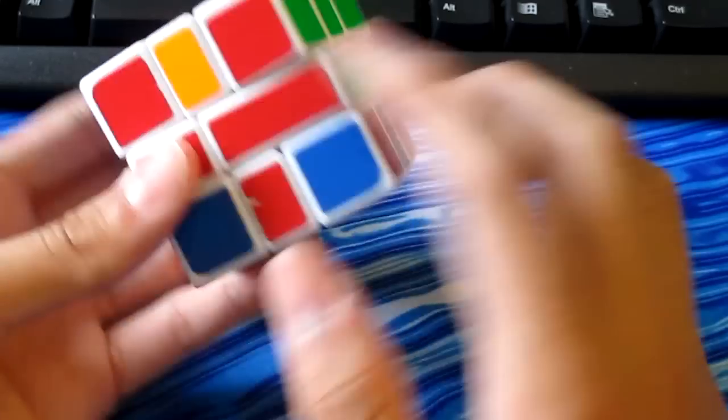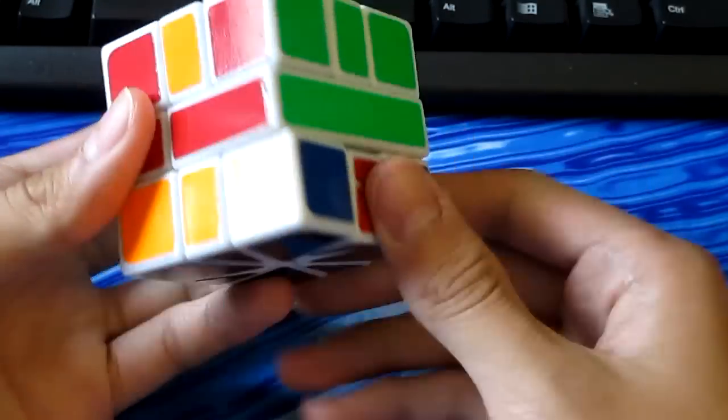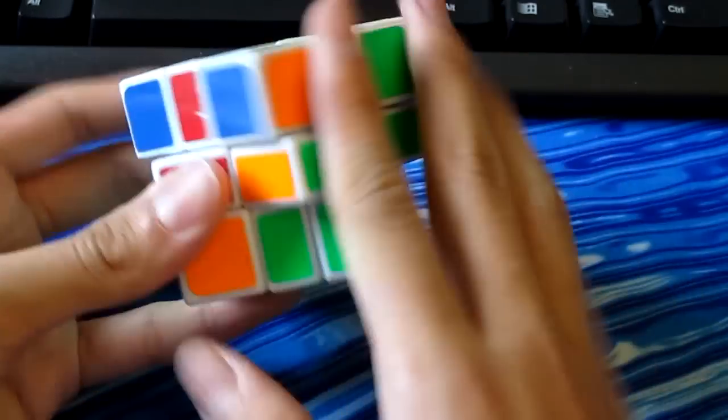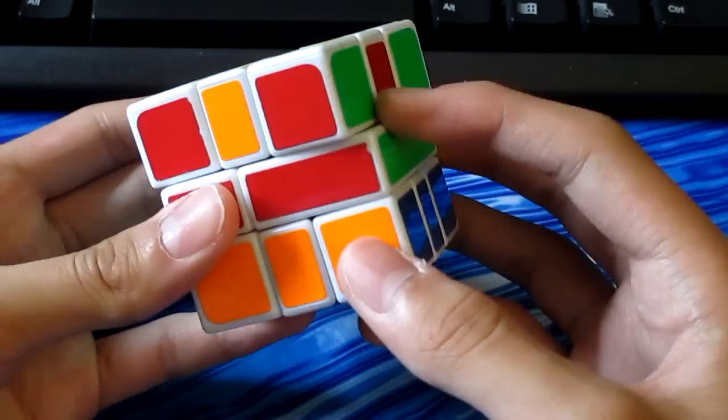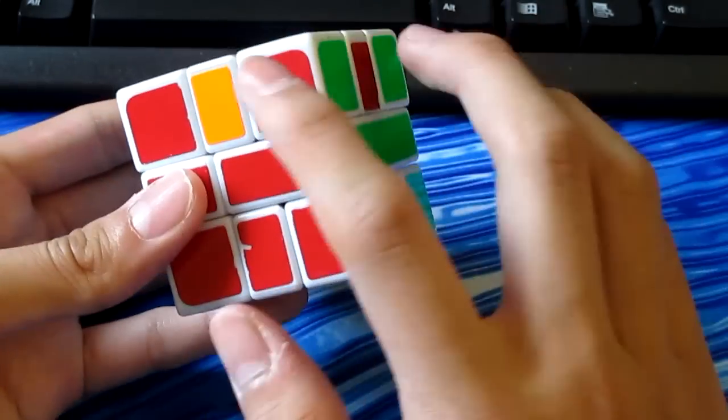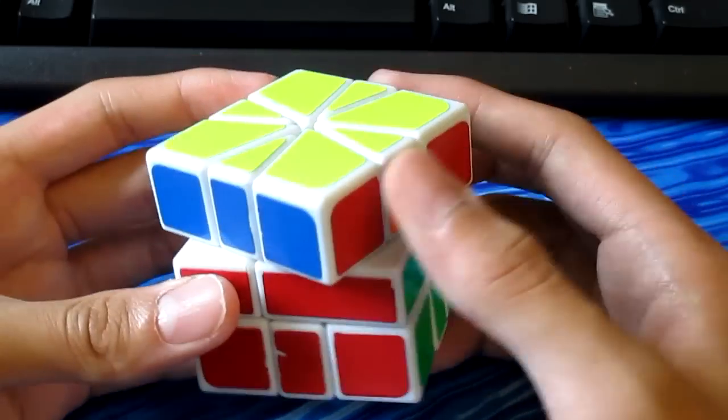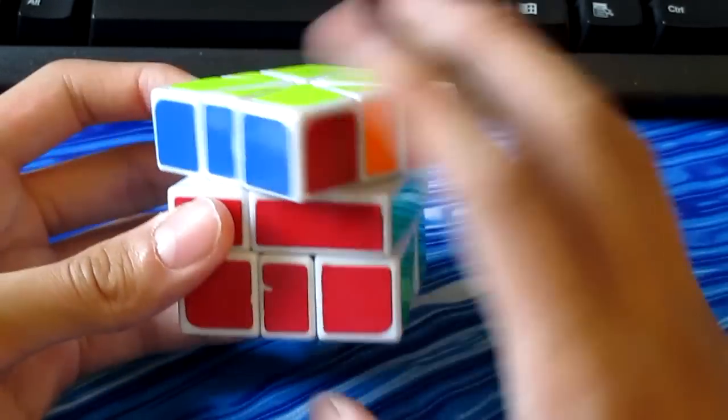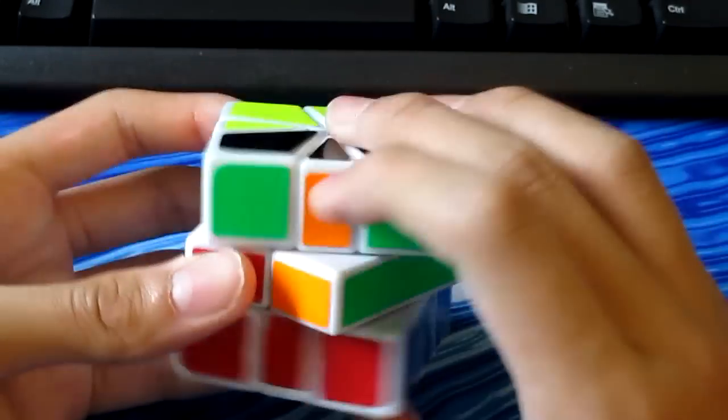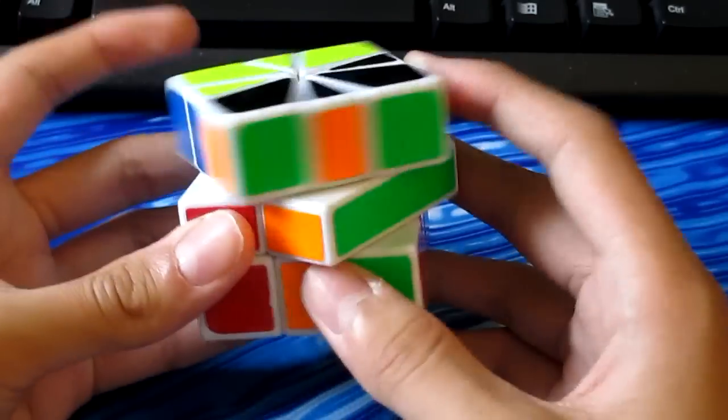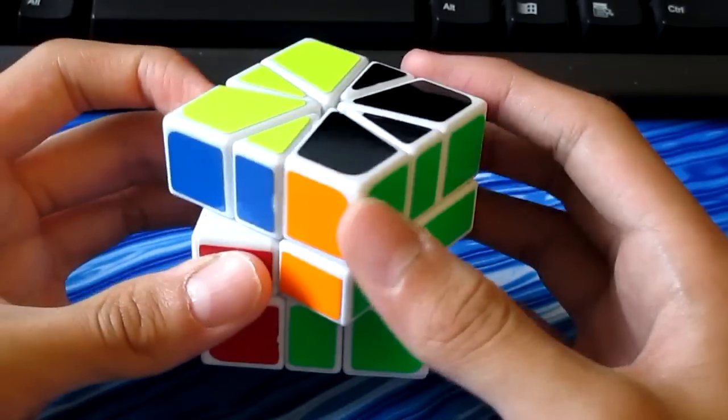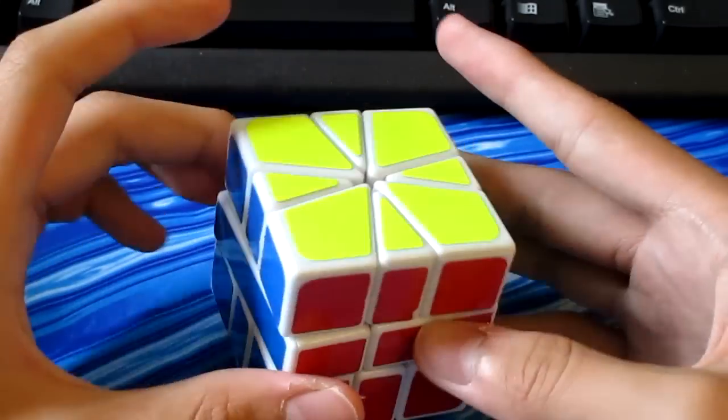We have an adjacent down here, so I like to just swap those two. And then here we have a U perm. This can just be done with two of those. And there we solved it.